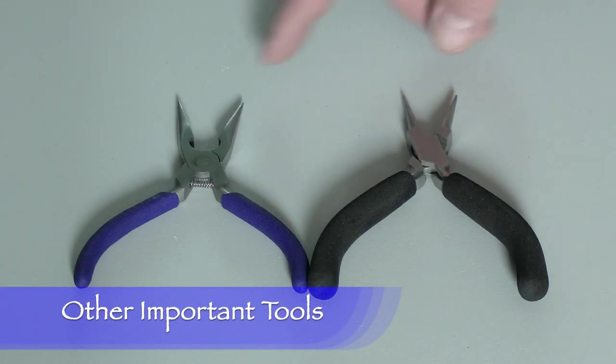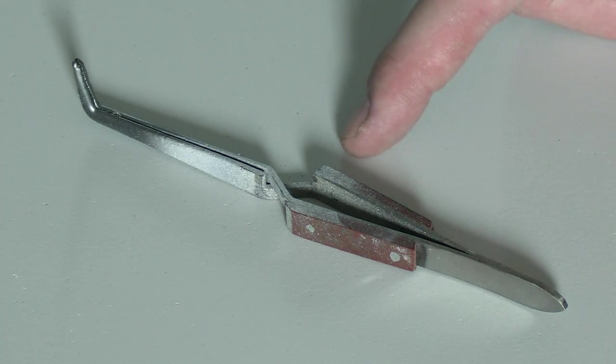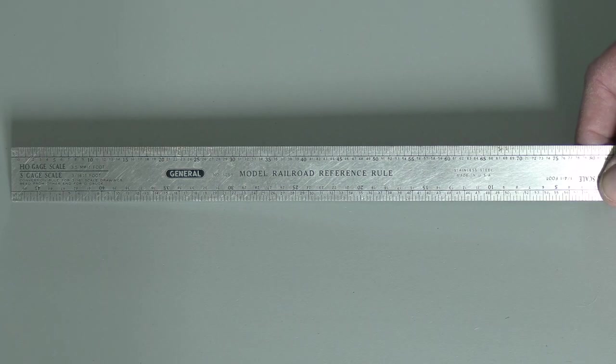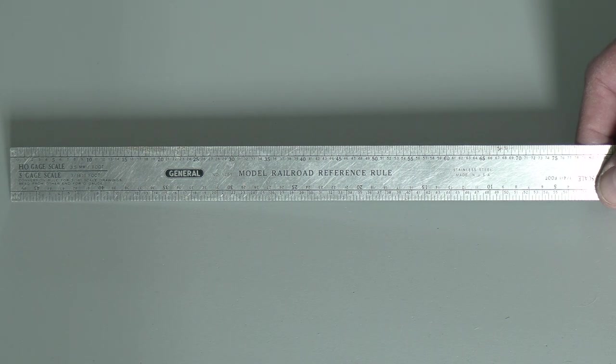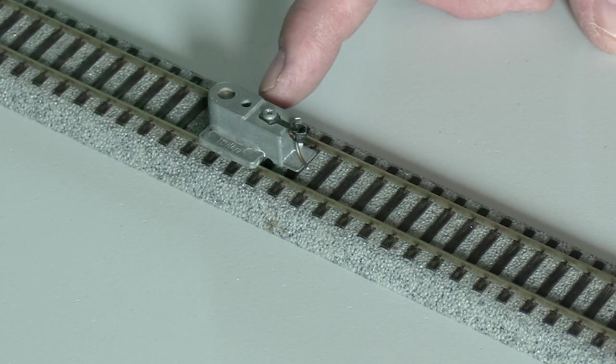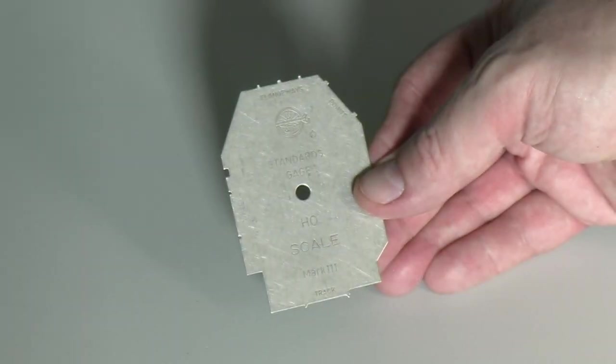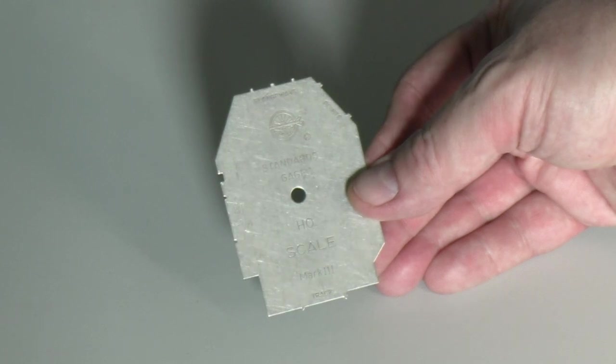I have two pairs of needle nose pliers. I probably could have got by with just one, but since they're small, I figured why not. This is a set of sprung tweezers, really good for holding small parts. This is a model railroad reference rule, also good as a straight edge. I brought a piece of track and a KD coupler height gauge so I can check the coupler height, and an NMRA standards gauge to check the wheel gauge.